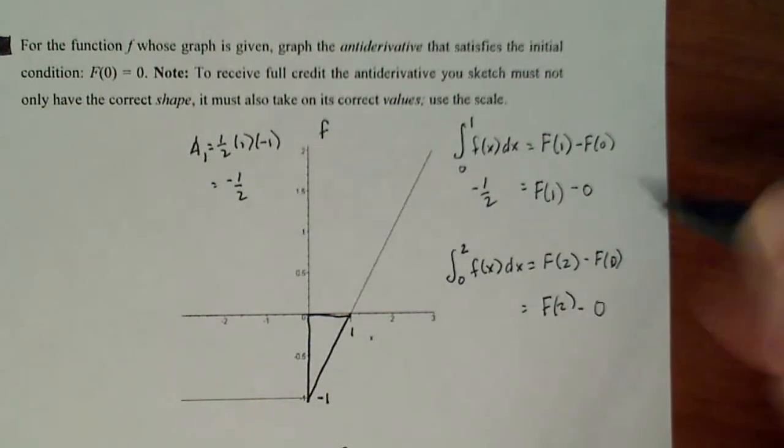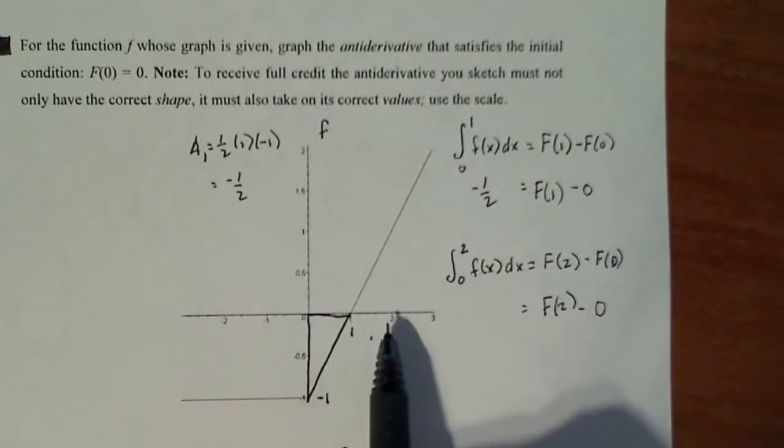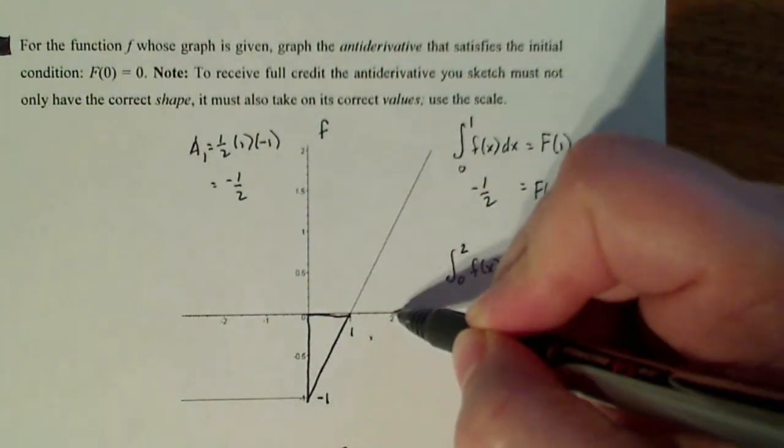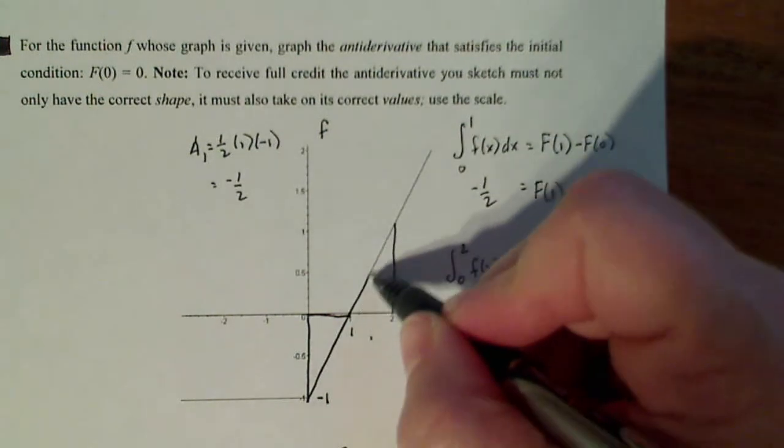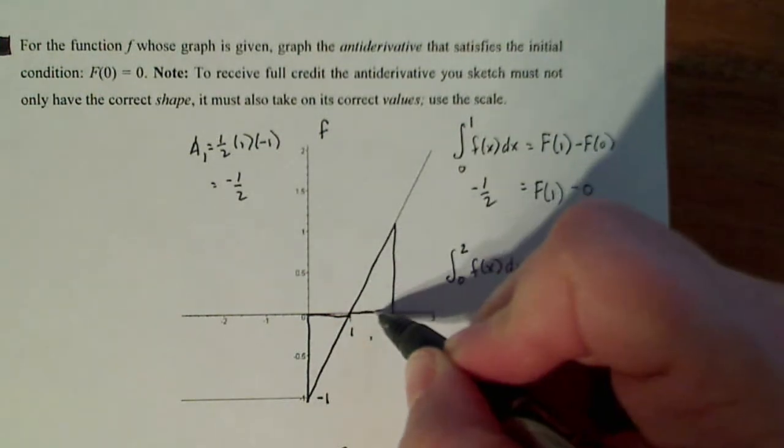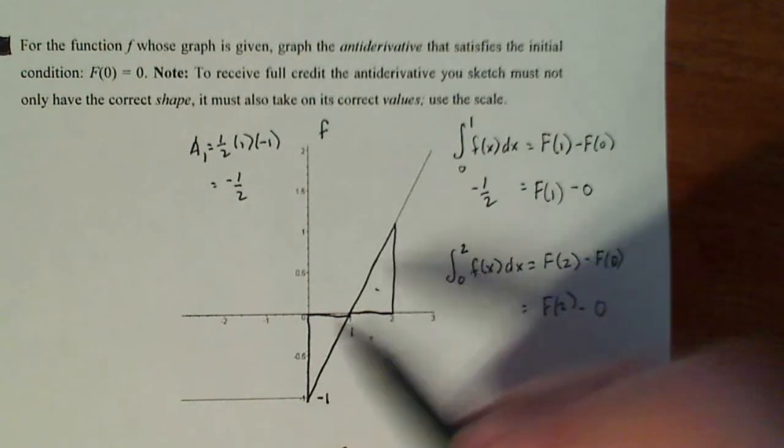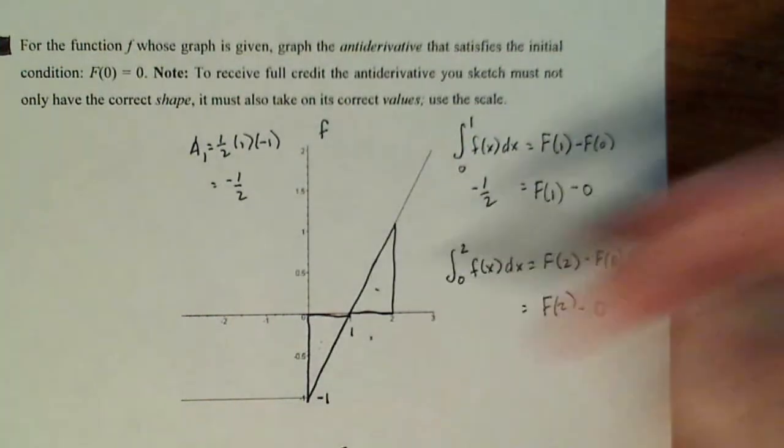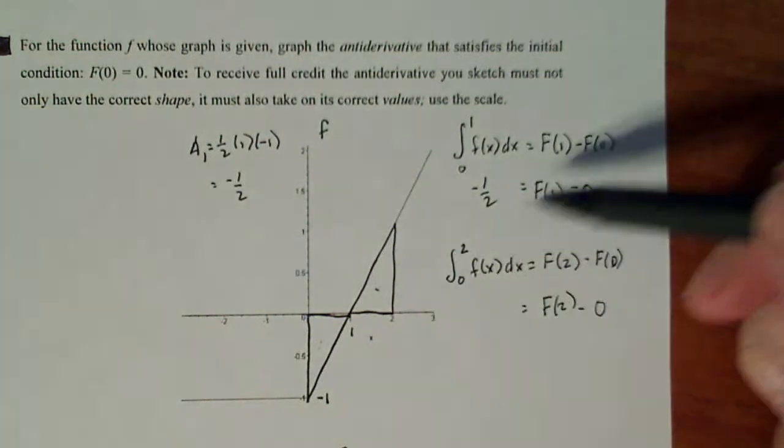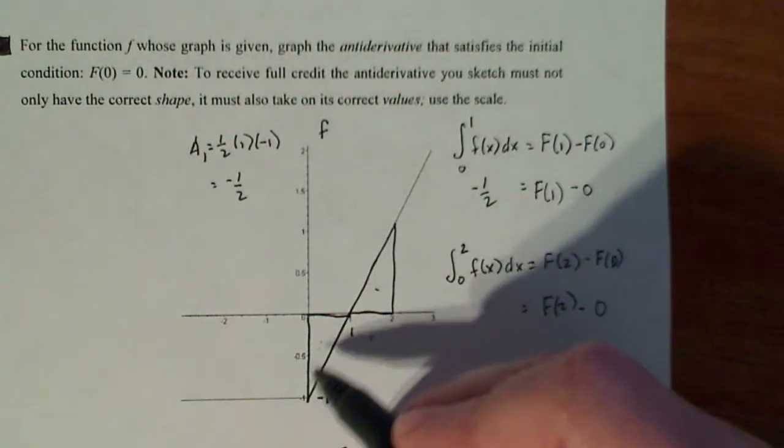So f of two is my unknown. I just need the area from zero to two between my function and my horizontal axis. So I have this triangle over here. Now the area of this triangle and the area of this triangle is exactly the same, but this one lies below and this one lies above. So the sum of those areas is going to be zero.